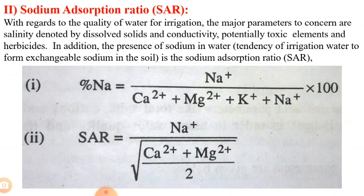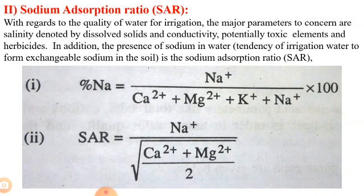The percentage of sodium is calculated as: Na⁺ divided by (Ca²⁺ + Mg²⁺ + K⁺ + Na⁺), multiplied by 100. The sodium absorption ratio (SAR) is calculated as: SAR = Na⁺ divided by the square root of (Ca²⁺ + Mg²⁺) divided by 2. Using this formula, you can calculate the SAR or sodium absorption ratio.